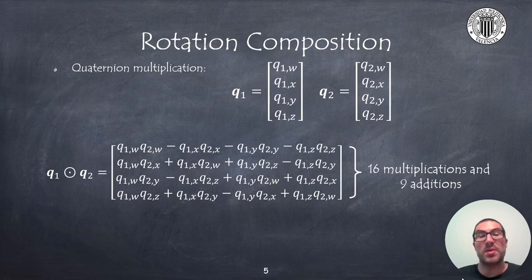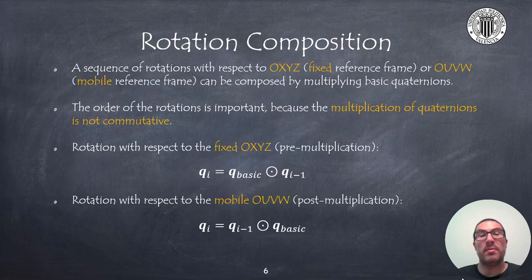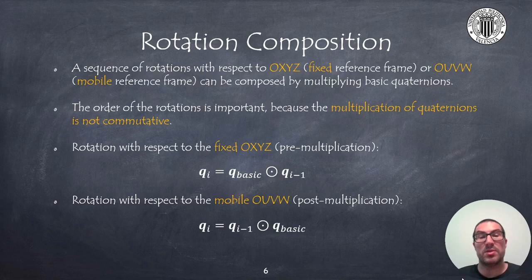The operator between both quaternions represents the quaternion multiplication operator. In total, this operation involves 16 multiplications and 9 additions. We can perform the composition of rotations by multiplying quaternions. If we do the rotation with respect to the fixed reference frame, we must pre-multiply the basic rotation with the current orientation quaternion from the previous iteration. If we perform a rotation with respect to the mobile reference frame, the operation we need to perform is post-multiplication between quaternions. The order of multiplications between quaternions is important, exactly as in rotation matrices, since the quaternion multiplication operator is not commutative.